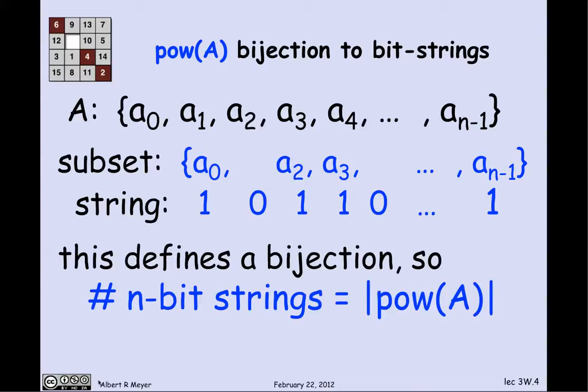This clearly defines a bijection between subsets and strings, because given a subset I can uniquely determine the string, and given the string I can uniquely determine the subset — there's one arrow in and one arrow out of each. So I can immediately conclude by the bijection theorem that the number of n-bit strings is equal to the size of the power set of A.